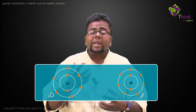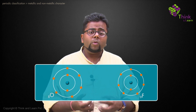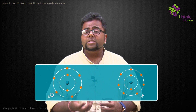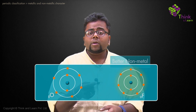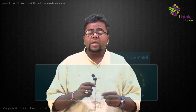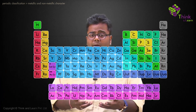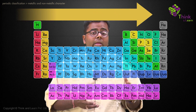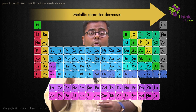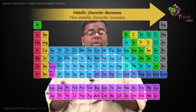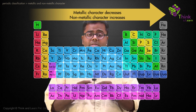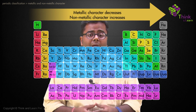Similarly, to determine which is a better non-metal — such as oxygen vs. fluorine — we check which can accept an electron more easily. Fluorine accepts an electron more easily than oxygen, so fluorine is a better non-metal. Moving from left to right in a period, metallic character decreases and non-metallic character increases.